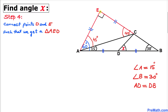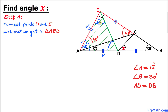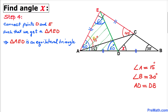Next, let's connect points D and E. Focusing on triangle AED, we know two of its sides are equal in length. Since angle A in this triangle is 60 degrees, the other two angles must each be 60 degrees as well, because they must sum to 180 degrees. This makes triangle AED an equilateral triangle, so all three sides — AE, ED, and DA — are equal in length.